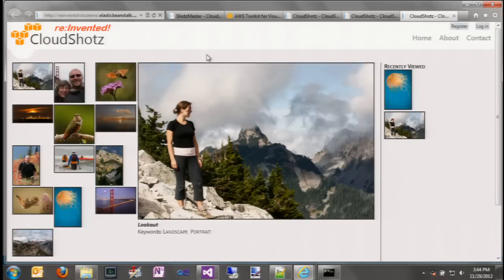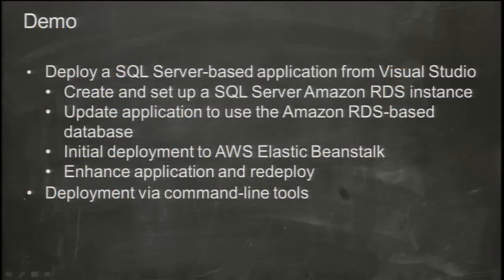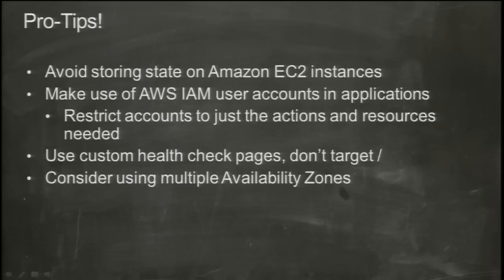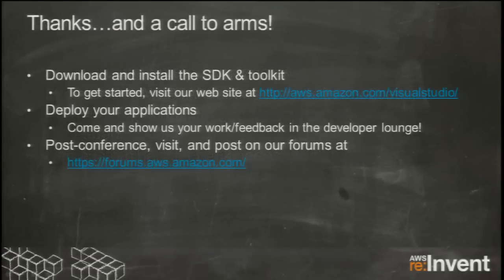That's really what we wanted to show as far as how to use the toolkit. A few final tips: first, it's really important to think about these EC2 instances as something that's kind of throw-away — never store state on them, because auto scaling can come up and decide you need new instances or tear one down, and any stored state would be lost. As Steve showed, using IAM is a great way to lock down what your applications can do. Using the custom health check page is another good tip. And also consider using multiple availability zones — you saw when we went to the advanced tab there were a few options in there to configure that. Thanks so much for coming to our talk. I hope I was as good as Jeff Bezos.